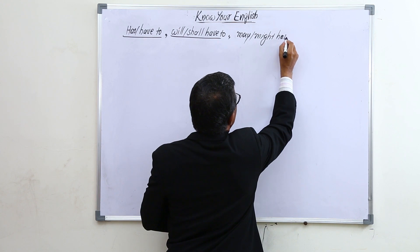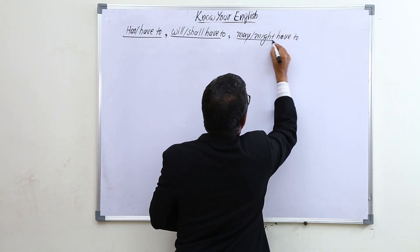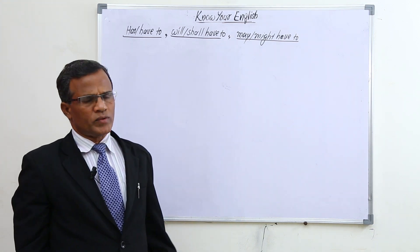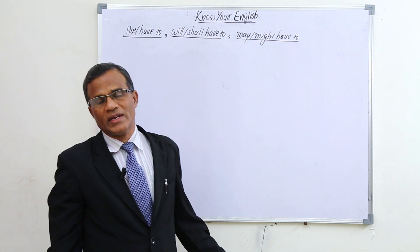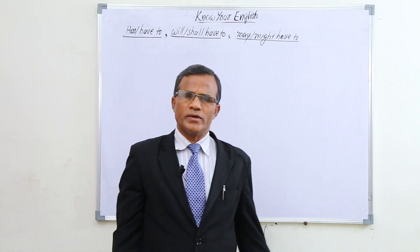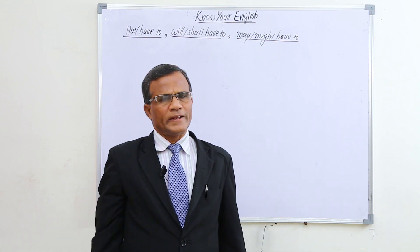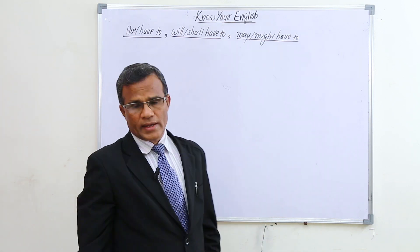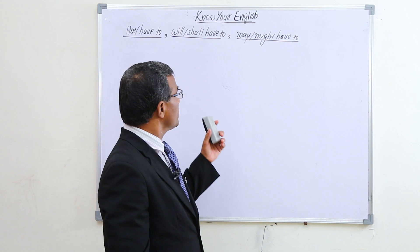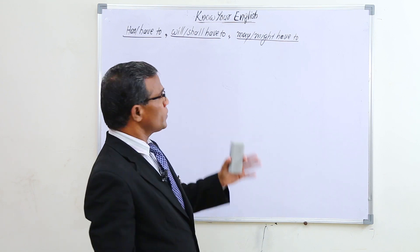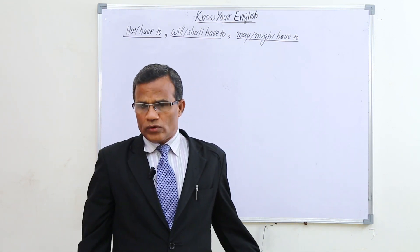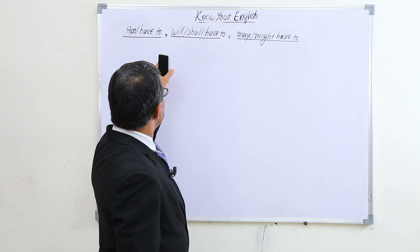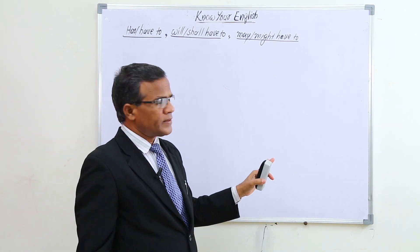The modal verbs we are going to learn today include: 'has to / have to,' 'will have to / shall have to,' and 'may have to / might have to.' So far we have learned 'can, could, may, might, shall, should,' and now we add these structures.